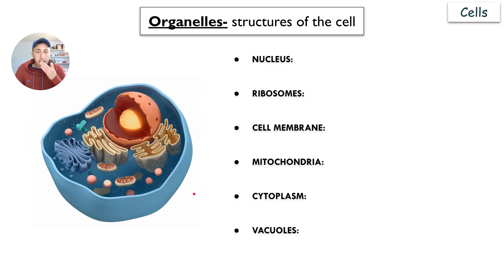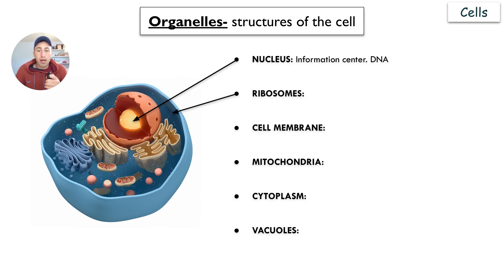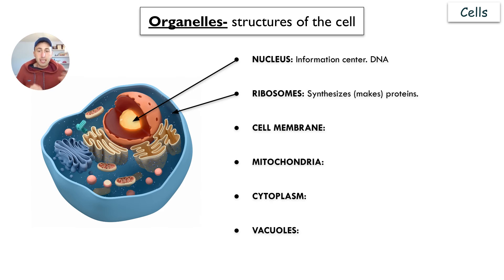In the animal cell, the organelles are the structures that make up the cell. You have the nucleus — that is like the brain of the cell, the information center, and it contains the DNA. You have the ribosomes, which synthesize, meaning make, proteins — they put together amino acids to make different proteins.